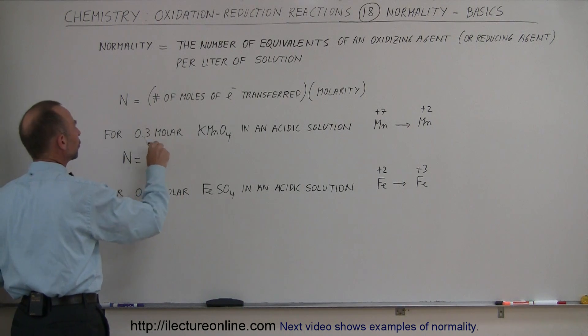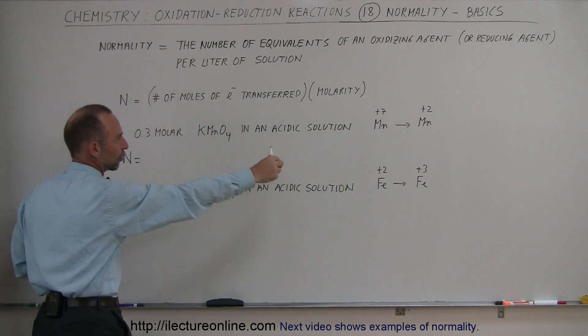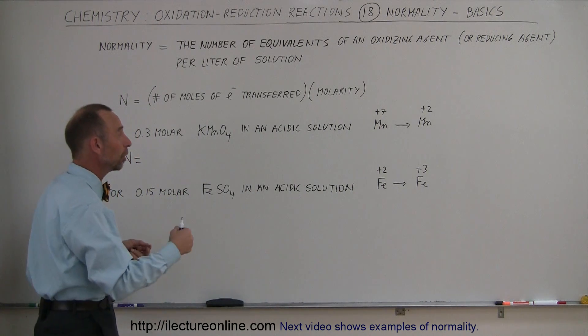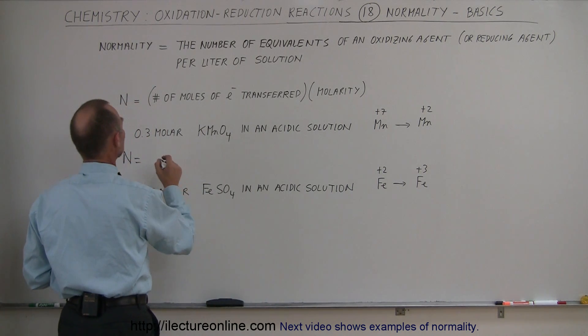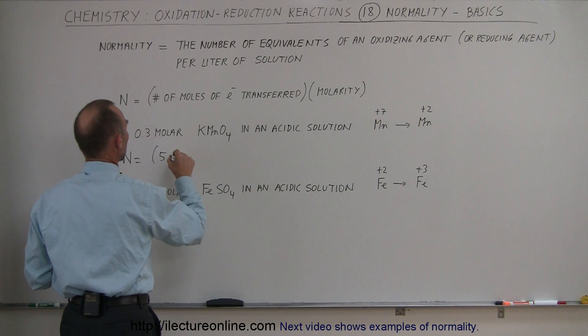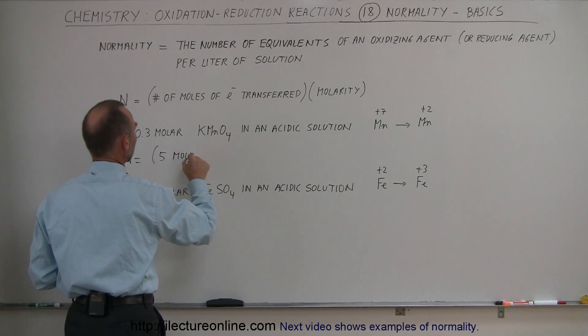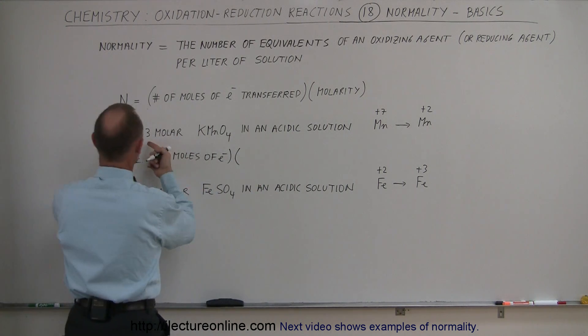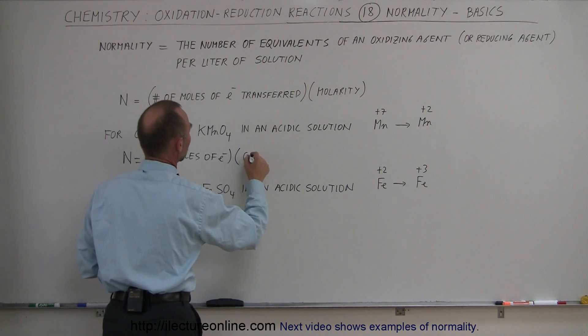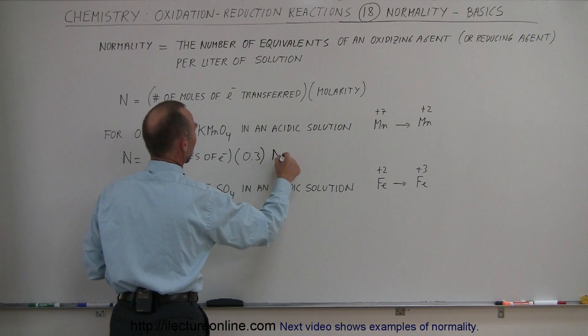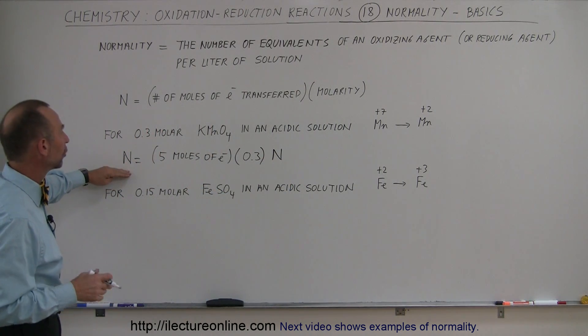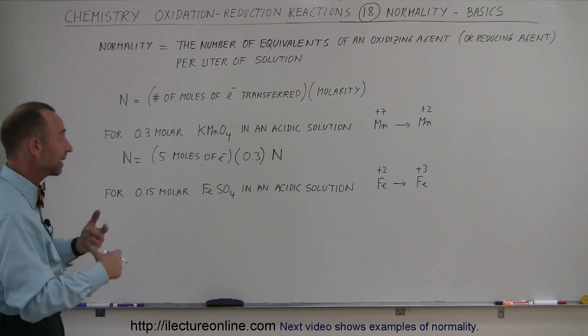So in this case, the normality will be equal to the number of moles of electrons transferred. So you can see clearly here that it would be five moles of electrons per mole of potassium permanganate. So it would be five moles of electrons multiplied times the molarity. And in our example, the molarity is 0.3. Then we have N as being the indicator of what we call normality, so the units of normality is N.